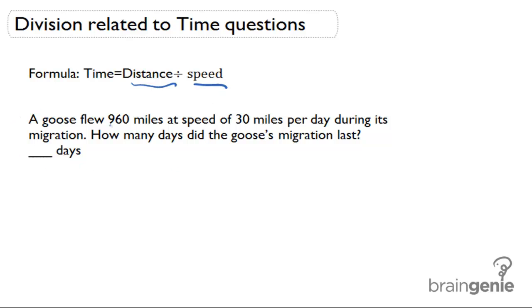So let's take this example. A goose flew 960 miles at a speed of 30 miles per day during its migration.